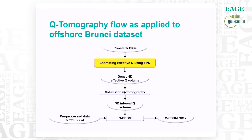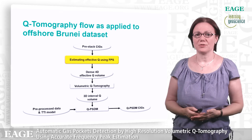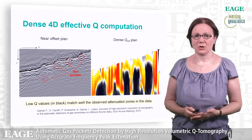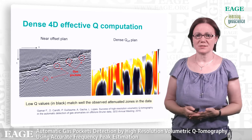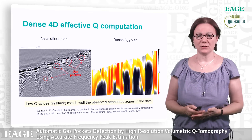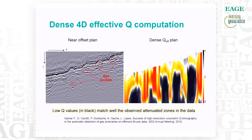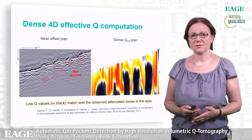Let's see the result of the frequency peak shift on the real offshore Brunei data. On the left-hand side, we have one near-offset section where the shallow gas pockets, typical of the Brunei region, are indicated in red. These strong anomalies affect the coherency and the amplitude of the structures beneath.